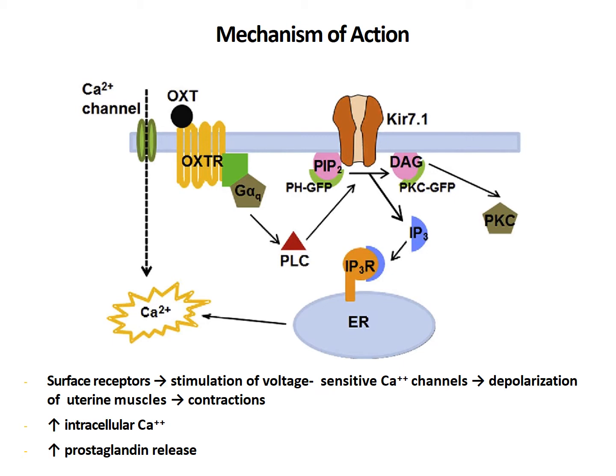While converting PIP2 to diacylglycerol, IP3 (inositol triphosphate) also gets released. This inositol triphosphate then acts on the endoplasmic reticulum receptors, causing calcium-induced calcium release — sequestering intracellular calcium storage and thereby increasing the level of calcium inside the cell, hence leading to contractility behavior. It also increases prostaglandin release.